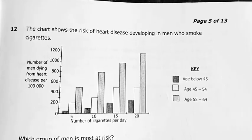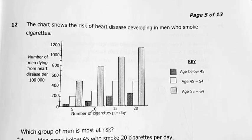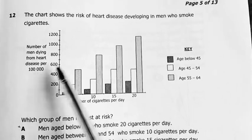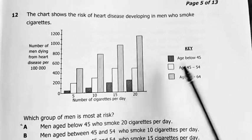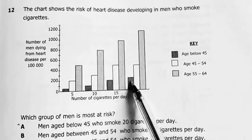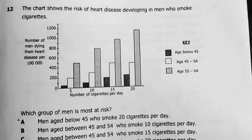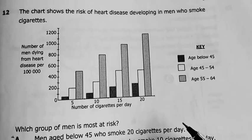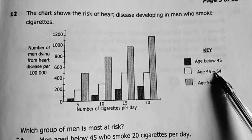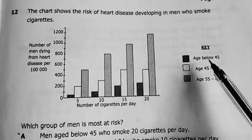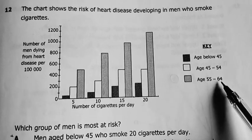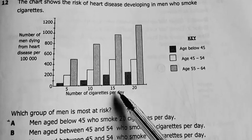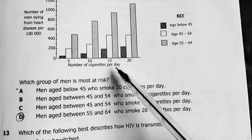Question 12. The chart shows the risk of heart disease developing in men who smoke cigarettes. From this diagram, this is the number of men that die per hundred thousand. And this is the number of cigarettes they smoke per day. Look at the key. Age below 45, the numbers are quite big. There's no small number when it comes to deaths. Unless maybe deaths of chickens because you're about to have a party or something. Then number 45 to 54, they're a little bit more than these who are below 45. Then 55 to 64 are quite huge, especially for those who smoke 20 per day, 20 cigarettes per day.